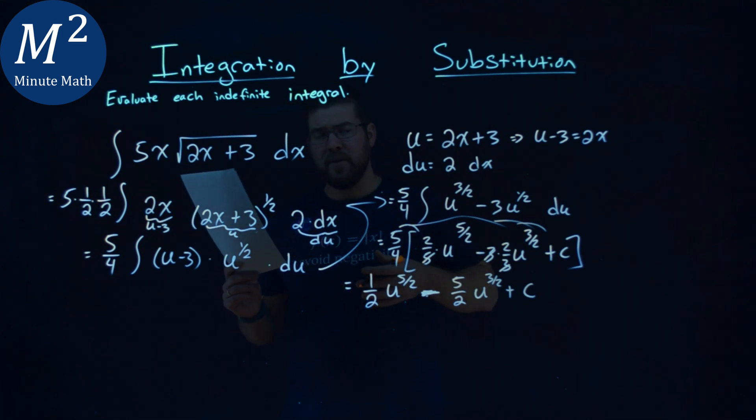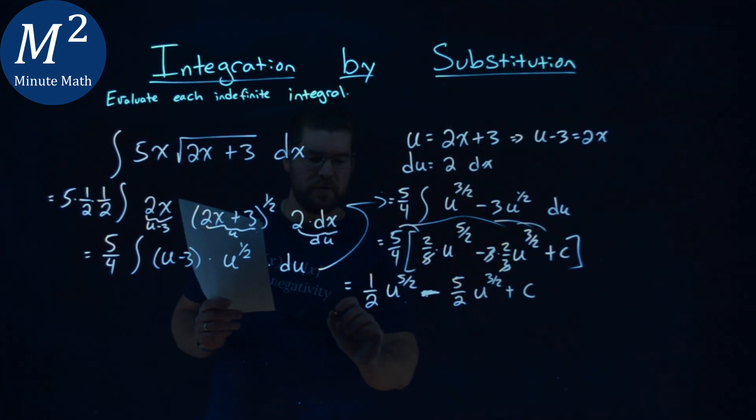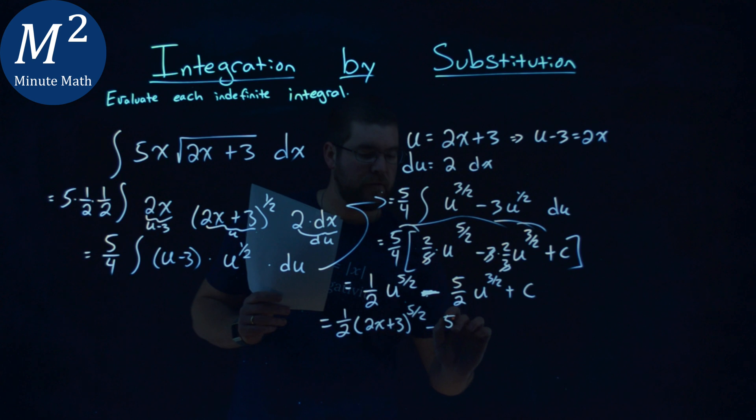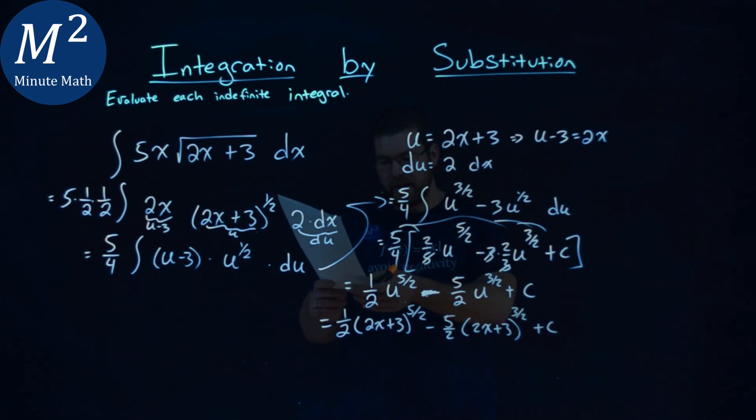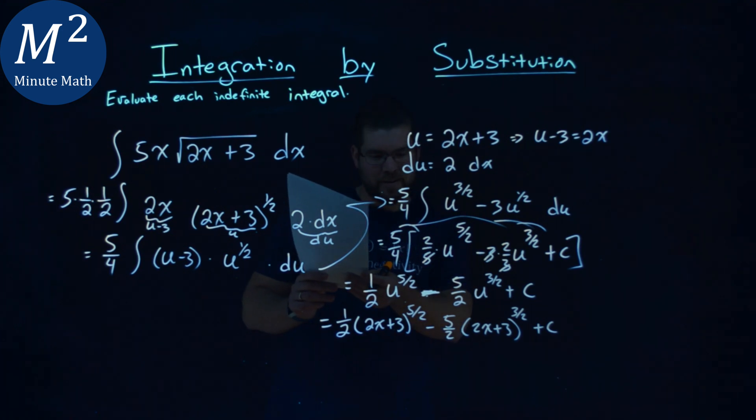Now, the easy part. We just plug in 2x plus 3 in for u. So we have a 1 half here, our u value, a 2x plus 3 to the 5 halves power, minus 5 halves times a 2x plus 3, again, for the u value, to the 3 halves power, plus c. Let's double check that was correct. I have 1 half 2x to the 5 halves, minus 5 halves 2x to the 3 halves power, plus c. Perfect.